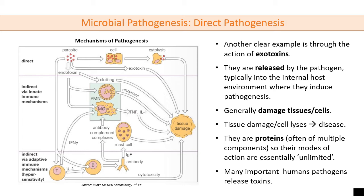Different exotoxins are released at different sites in the body because the bacteria colonize different sites and act in very different ways. Similarly, Clostridium botulinum releases botulism toxin, which impacts the nervous system and causes a specific type of paralysis. Tetanus toxin also impacts the nervous system but in a different way, causing a different type of paralysis. So we're seeing different bacteria causing different types of disease, all acting through exotoxins, with the different types of disease occurring because different types of exotoxin are being released.